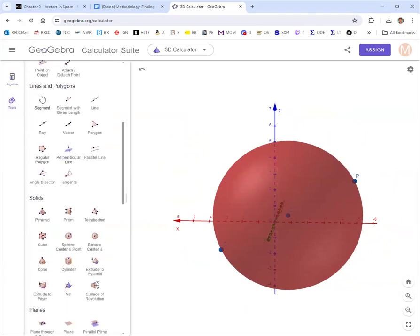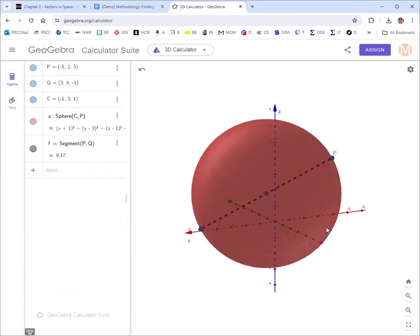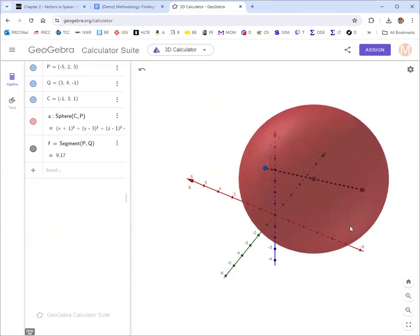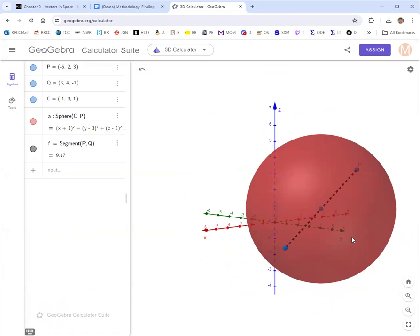You can do a segment joining P and Q, click on P and then Q. Then you can make sure that that segment goes through the center as well, just to be 100% sure. So there's kind of a geometric validation if you want. I'll save this and put that link in the document.